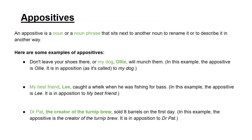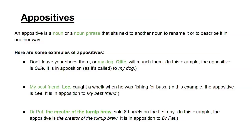Another example: 'Dear Pat, the creator of the turnip brew, sold eight barrels on the first day' — the appositive is 'the creator of the turnip brew,' positioned next to Dr. Pat. For the exams, know the definition of an appositive and be able to identify it within a sentence.